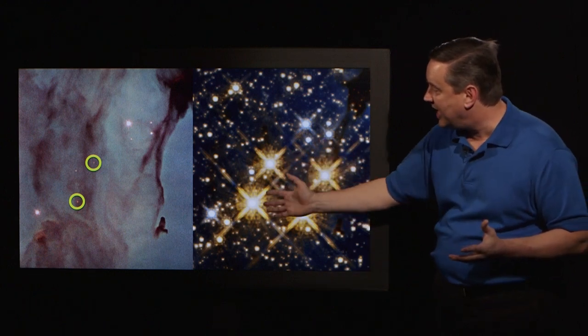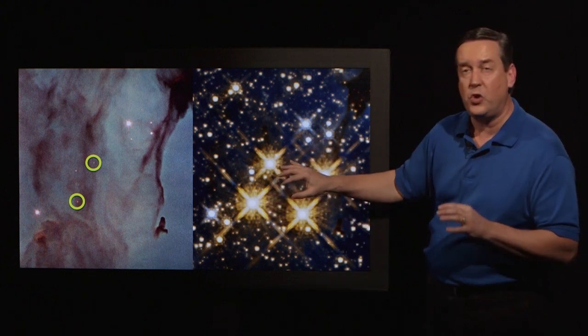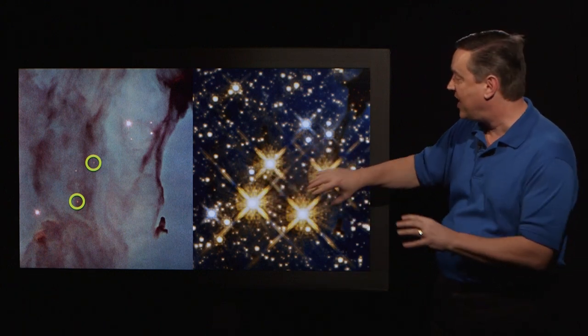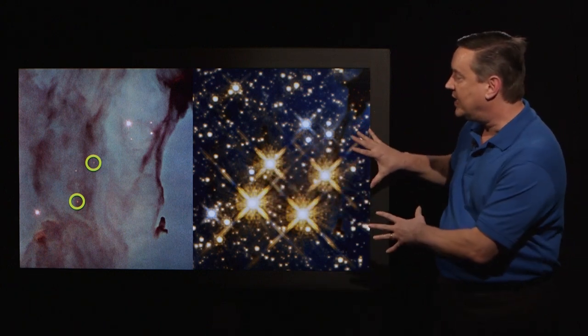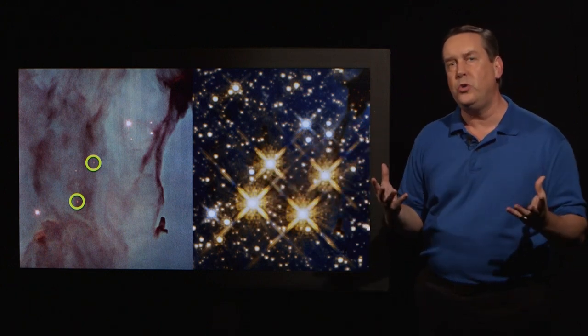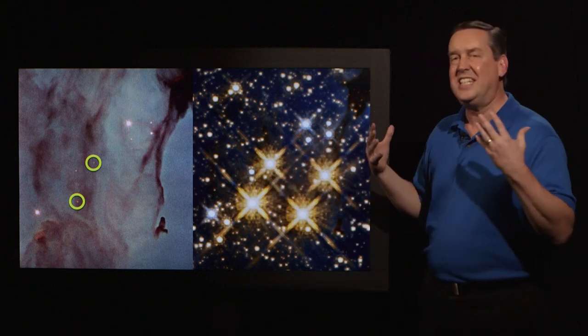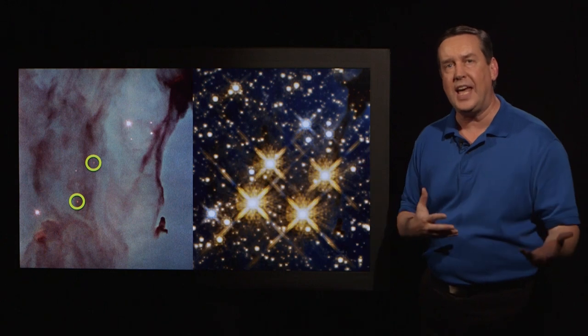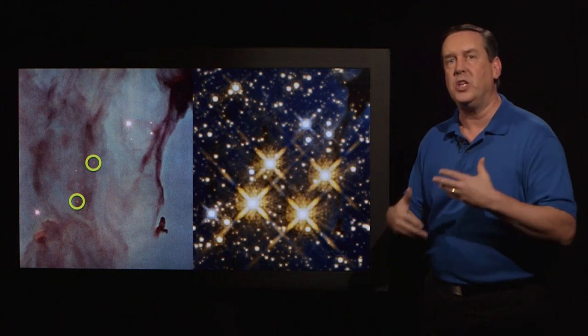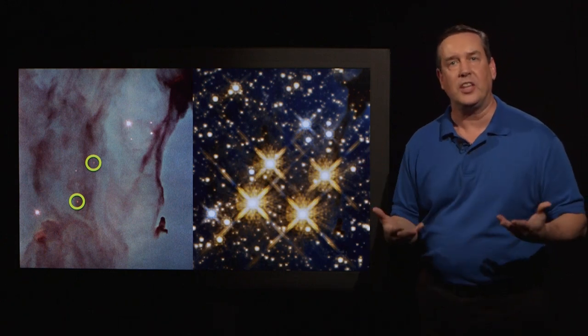So here we are looking at two very low mass stars, very bright. And it shows you just the difference you can get by using multi-wavelength astronomy.